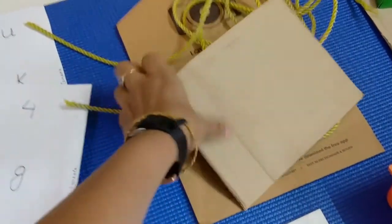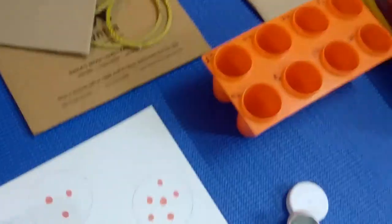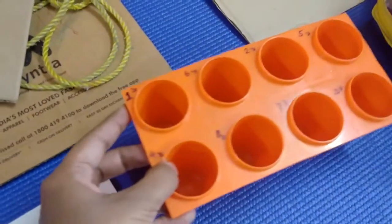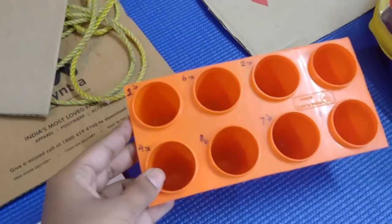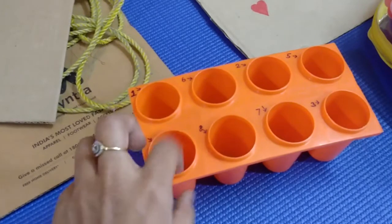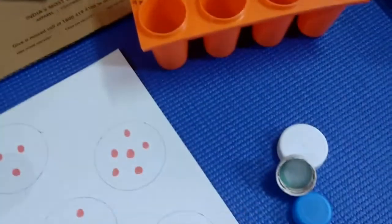This is a rope, and they have to wrap the rope over this cardboard. This is a kulfi maker—I have written numbers over here, and the children have to put the right number of popsicle sticks into these cavities.